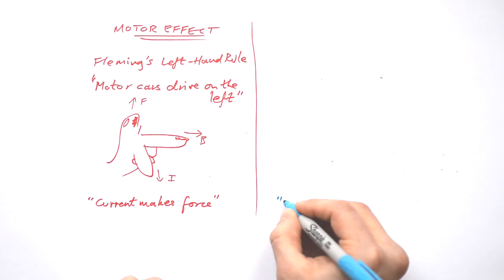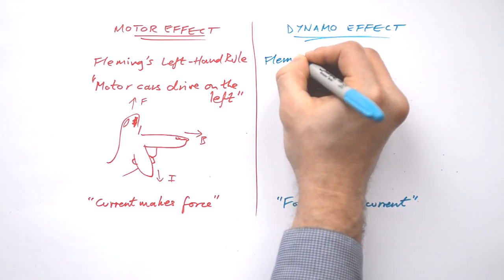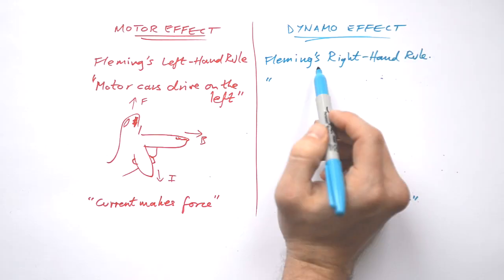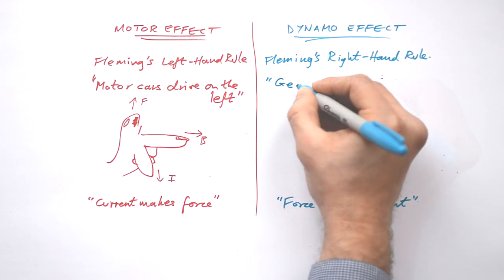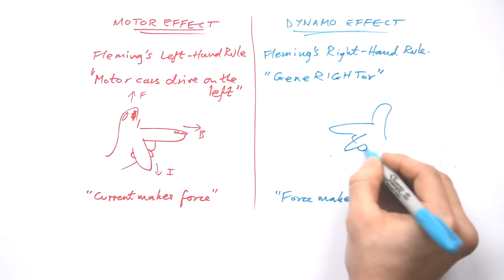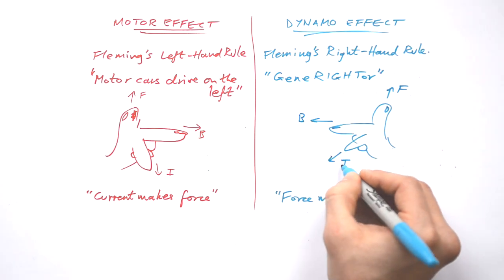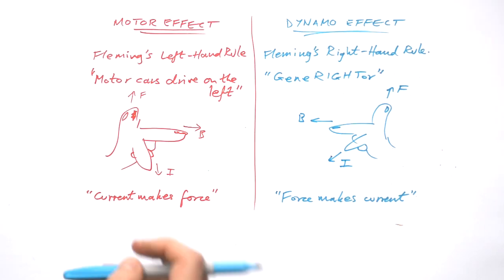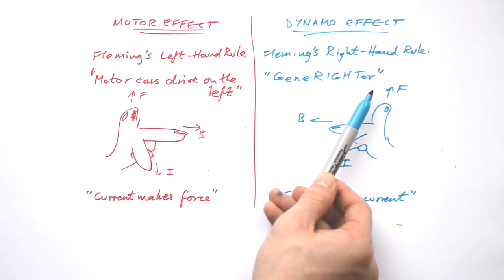But what if we have a force making a current, or inducing a current? We're now talking about the dynamo effect. Because it is effectively the opposite of the motor effect, we don't use Fleming's left hand rule, but rather Fleming's right hand rule. How to remember this? The dynamo effect is used in generators — so remember 'generator' as a pun. It's exactly the same: thumb is the thrust, first finger is the field, and second finger is the current.